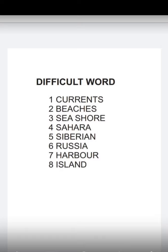Now it's time to learn some new and difficult words. The vocabulary words are: Currents (C-U-R-R-E-N-T-S), Beaches (B-E-A-C-H-E-S), Seashore, Sahara (S-A-H-A-R-A), Siberian (S-I-B-E-R-I-A-N), Russia (R-U-S-S-I-A), Harbor (H-A-R-B-O-U-R), and Island (I-S-L-A-N-D).